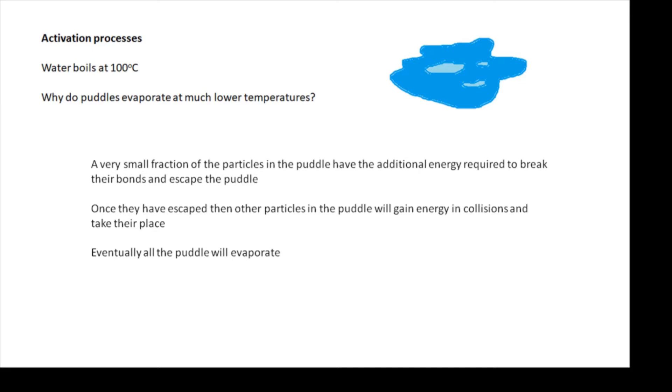A very small fraction of the particles. And then once they have escaped, then the other particles in the puddle are banging into each other, elastic collisions, and they'll be replaced. And then those energetic particles will escape, and eventually all of the puddle will evaporate. It's called an activation process. It's a process which happens due to a very small fraction of very energetic particles. And if we can calculate that fraction, then we can work stuff out. Perhaps we might be able to work out the rate, how quickly the puddle will evaporate.